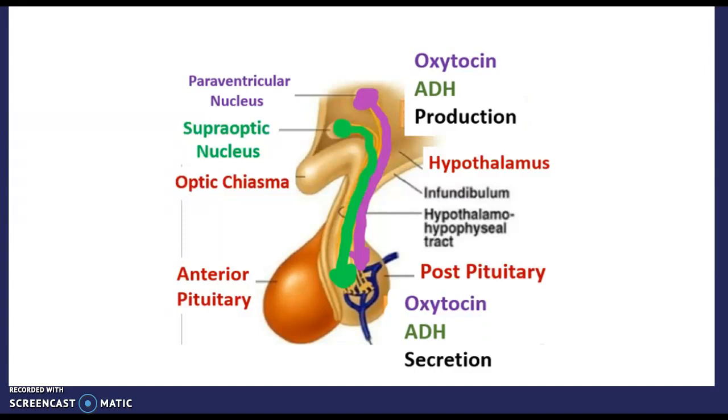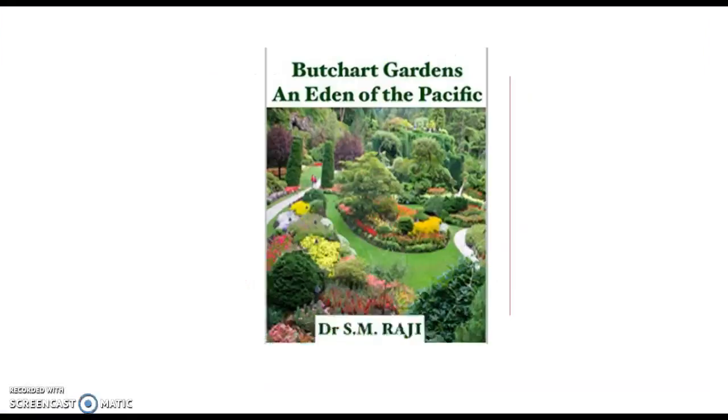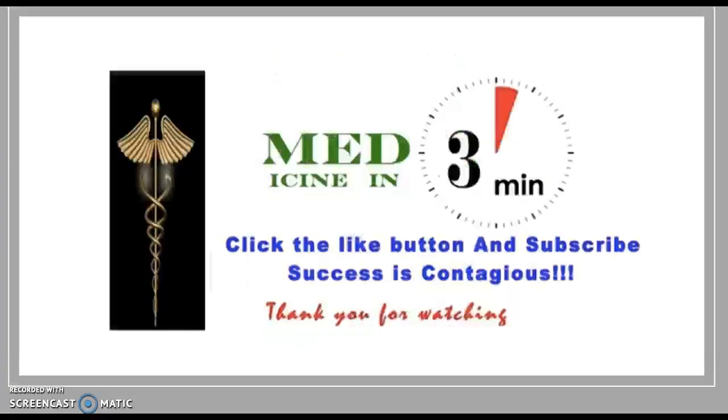That's it for the first part of the circumventricular organs. Hopefully we'll see you for the remaining six organs. That was Medicine in Three Minutes — thank you for watching.